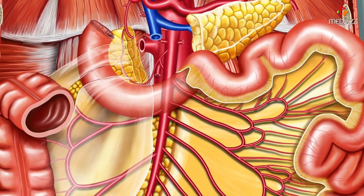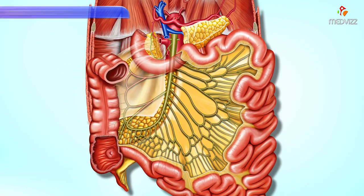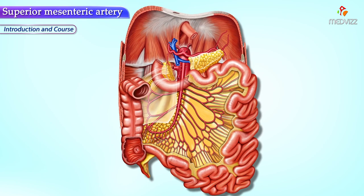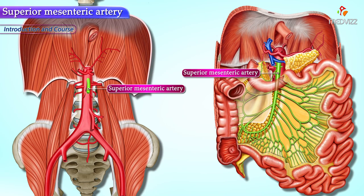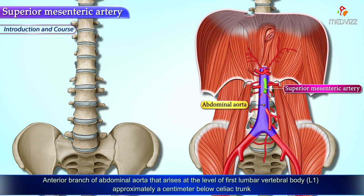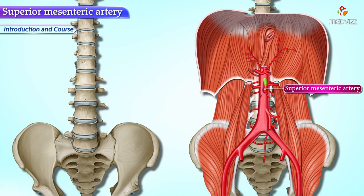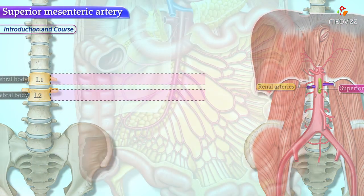Welcome to another video on anatomy. In this video we'll be discussing the superior mesenteric artery. The superior mesenteric artery is the anterior branch of the abdominal aorta that arises at the level of the first lumbar vertebral body, approximately a centimeter below the celiac trunk. It arises just above the level of the renal arteries, which arise at vertebral levels L1-L2.